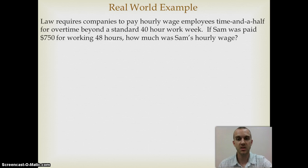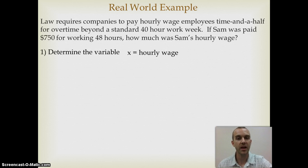So let's look at one last example of a real-world example. Federal law requires that companies pay time and a half once you've worked past a 40-hour workweek. If Sam was paid $750 for working 48 hours, how much is Sam's hourly wage? Well, the first thing I need to recognize is what is my variable. My variable, in this case, would have to be the hourly wage. It's the one thing I don't know. I know how many hours I worked. I know how much I made or how much Sam made. So I just need to figure out, well, what is the hourly wage?